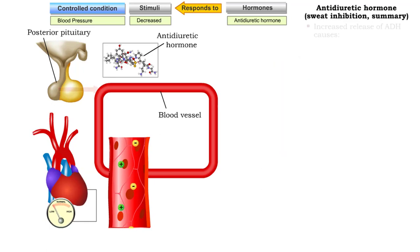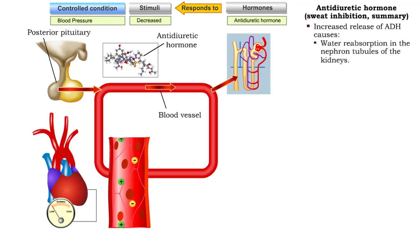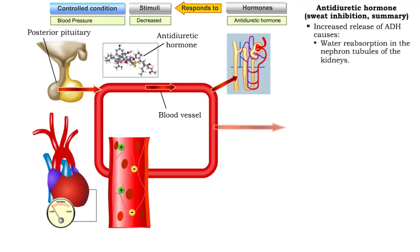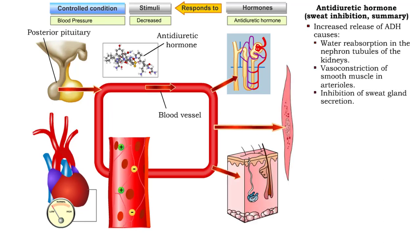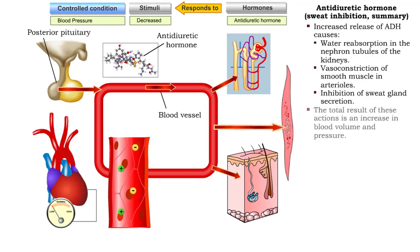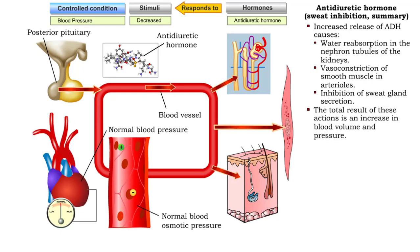Increased release of ADH causes water reabsorption in the nephron tubules of the kidneys, vasoconstriction of smooth muscle in arterioles, and inhibition of sweat gland secretion. The total result of these actions is an increase in blood volume and pressure.